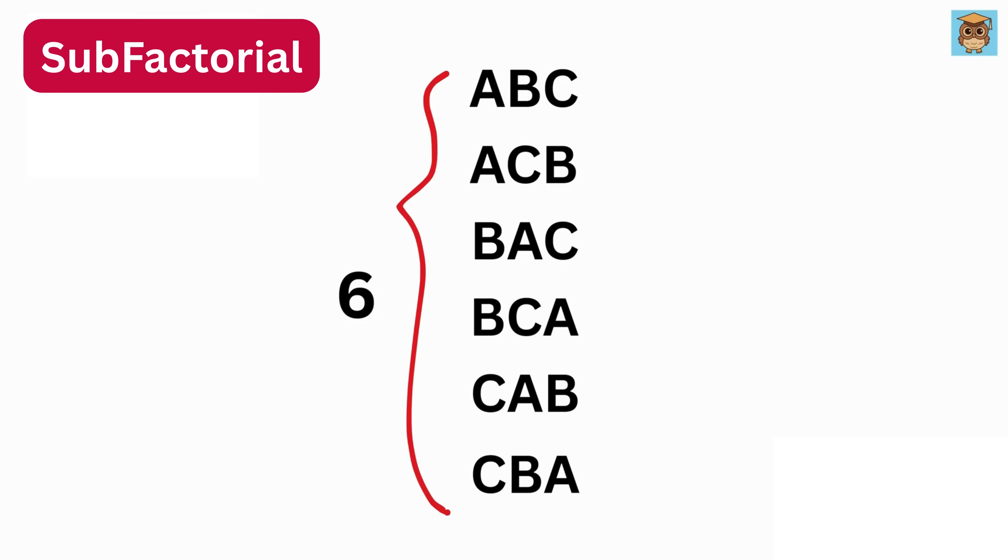This is where factorial comes into the picture. Since we are arranging three different letters, we calculate the total number of arrangements using 3 factorial, which gives us 3 times 2 times 1, or 6. And that's exactly the number of different arrangements we got.